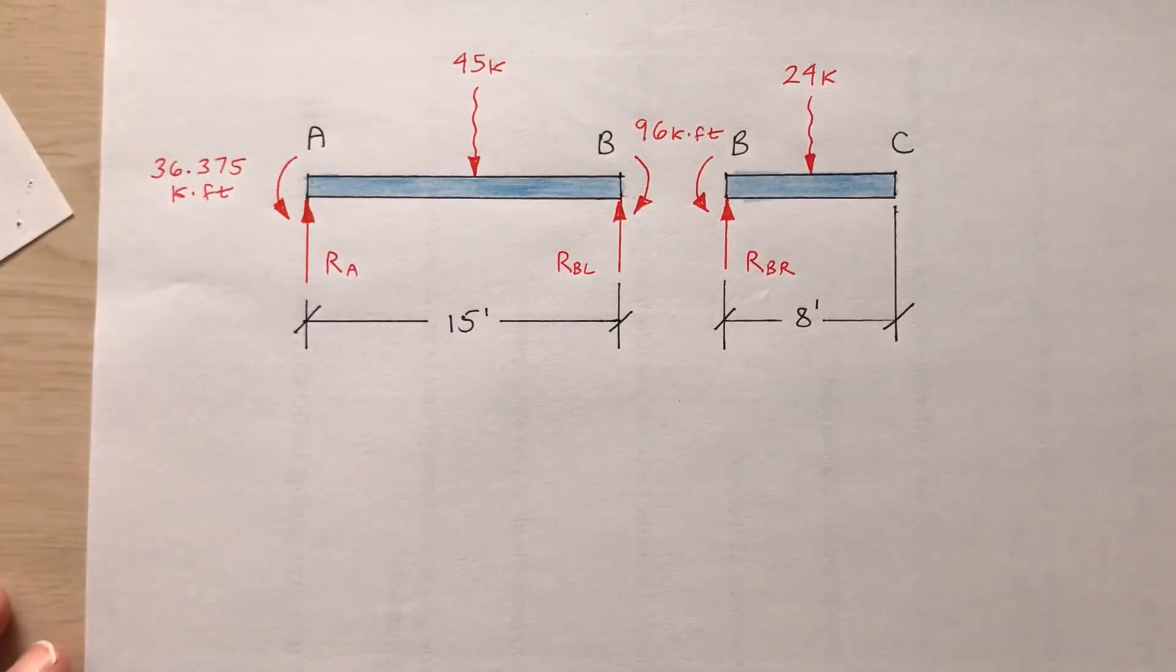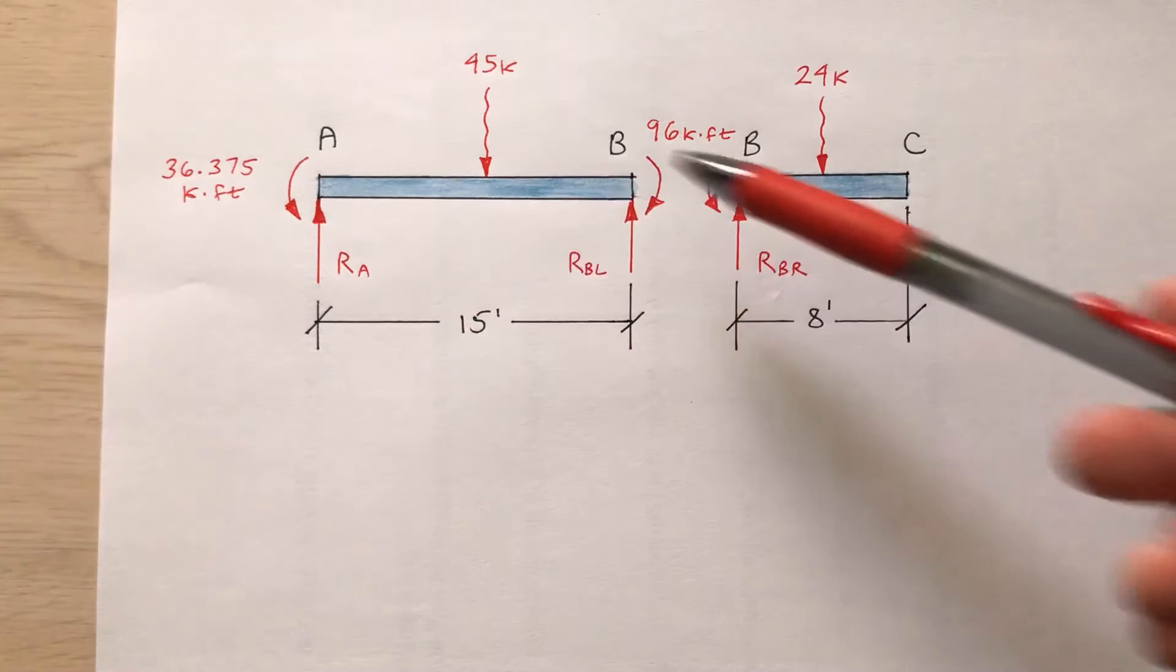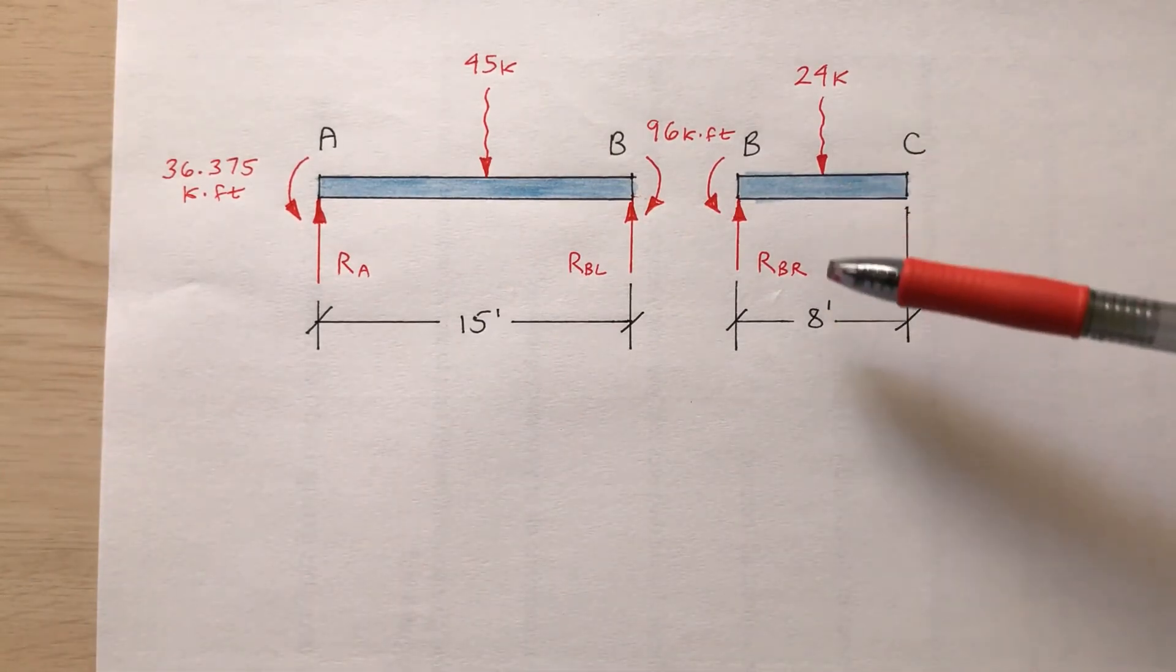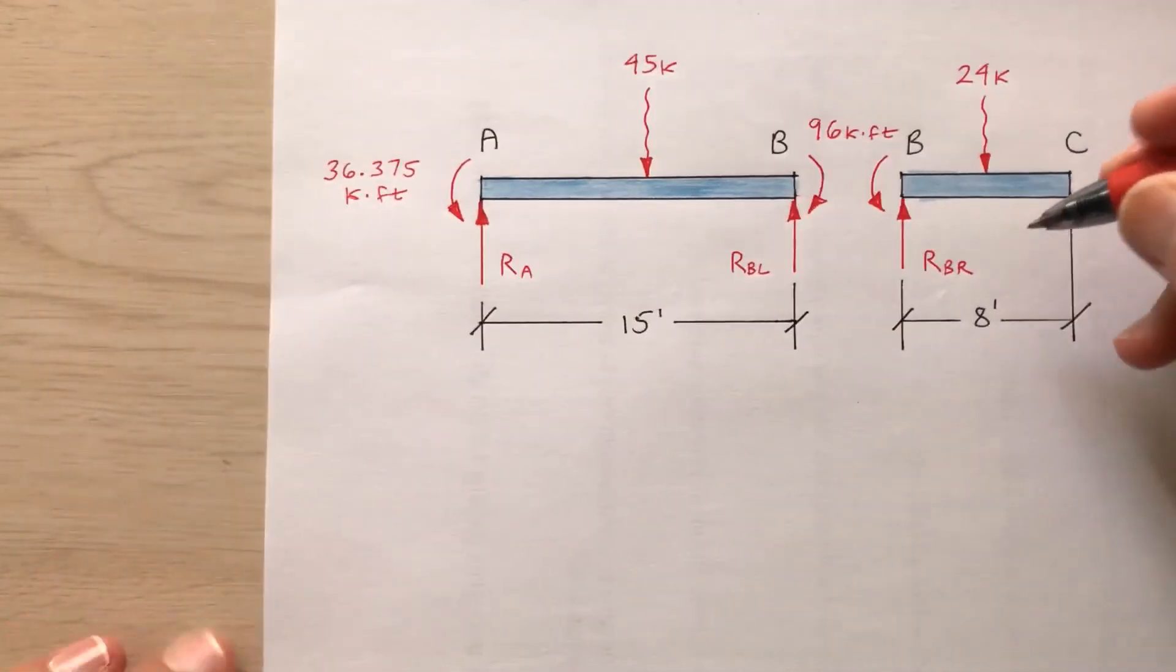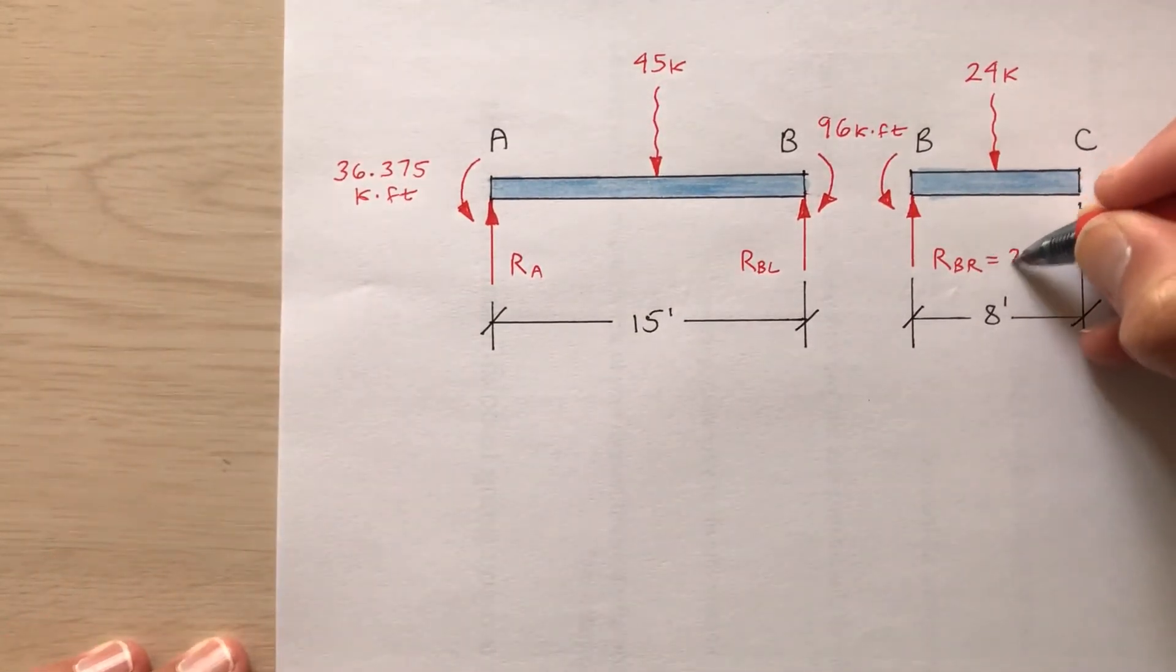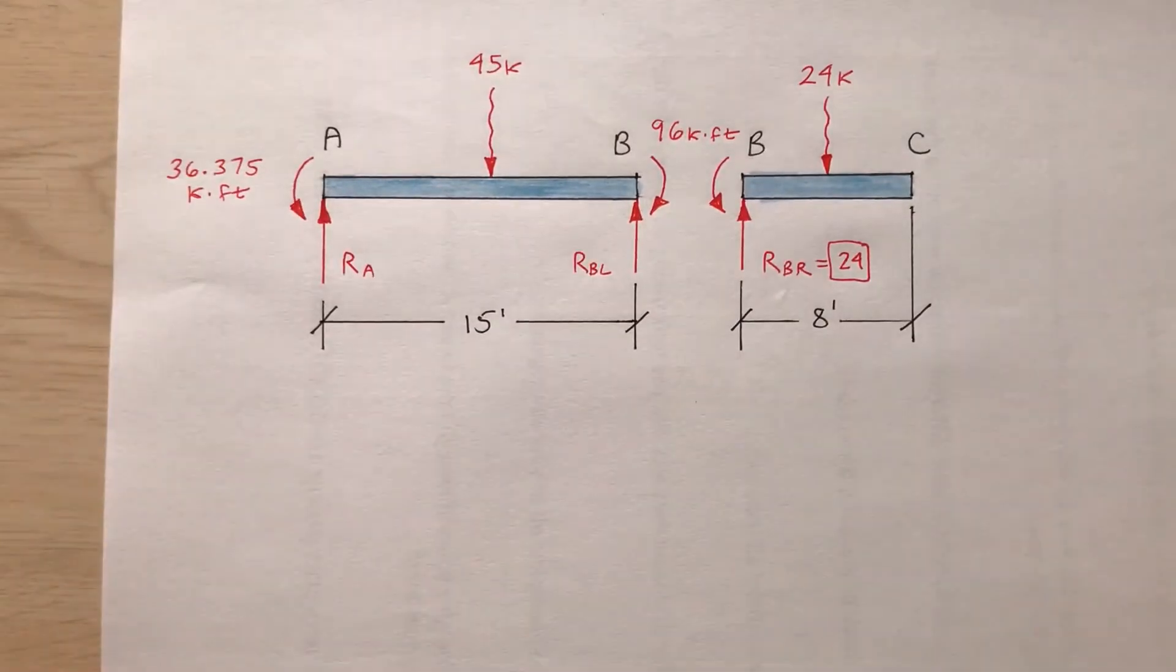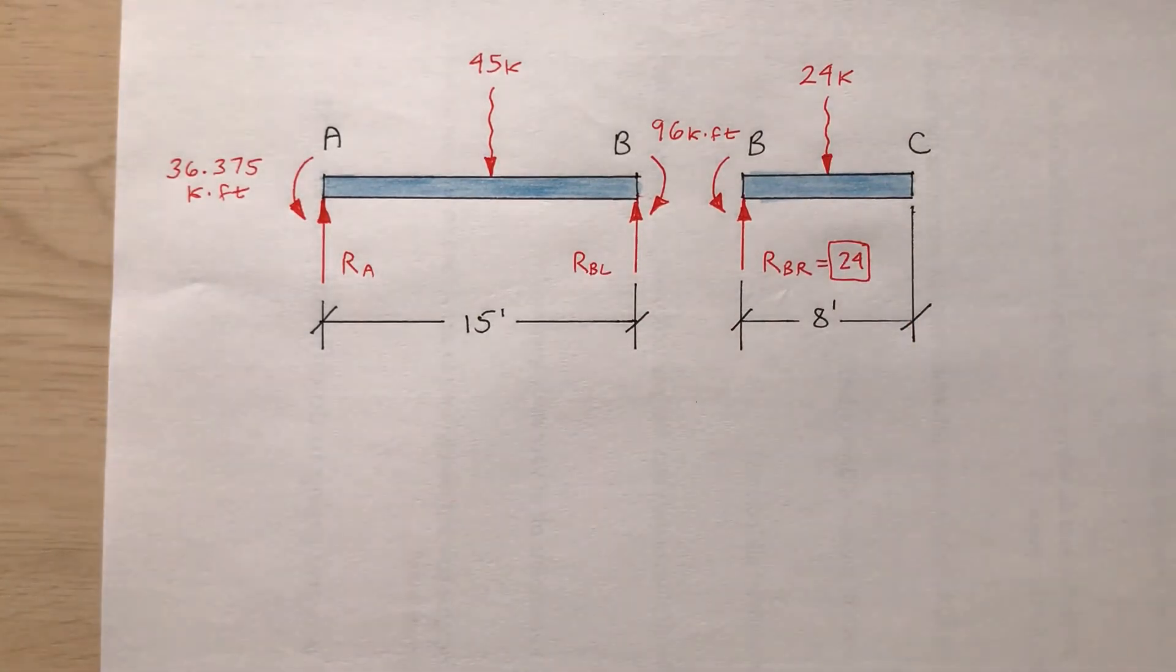Now you can consider the equilibrium of both of these portions separately. For example, analyze segment AB. Consider the sum of the moments about point A to find R sub BL. And you can find R sub BR on BC by finding the sum of the forces in the y direction. So obviously by inspection this is 24.